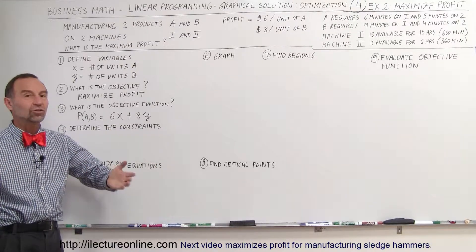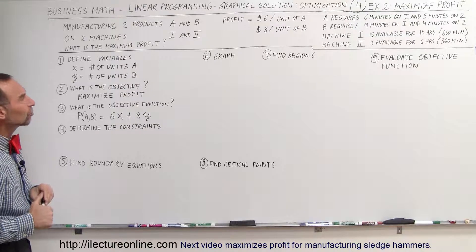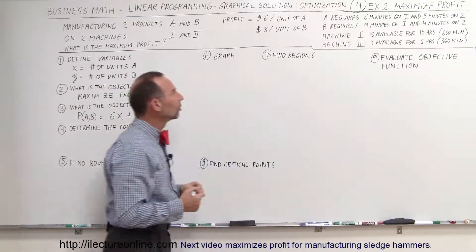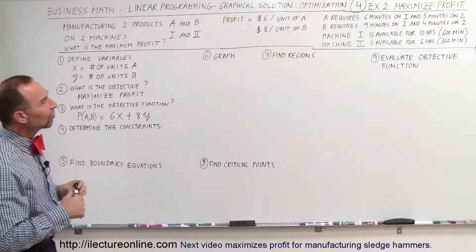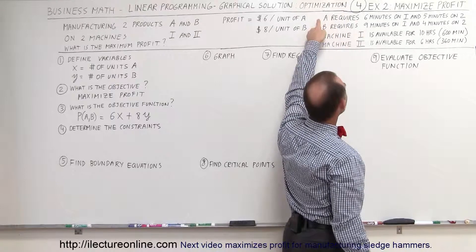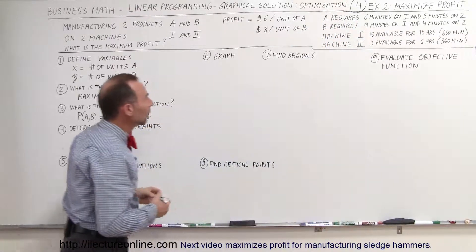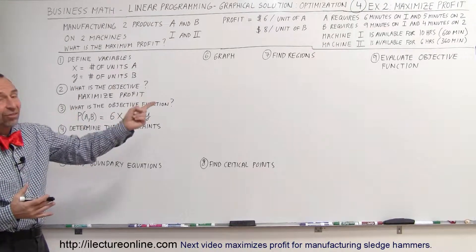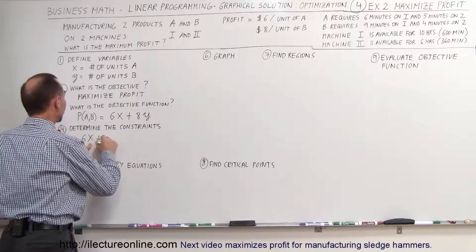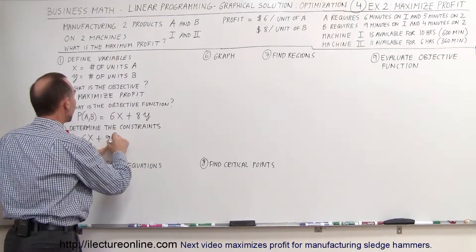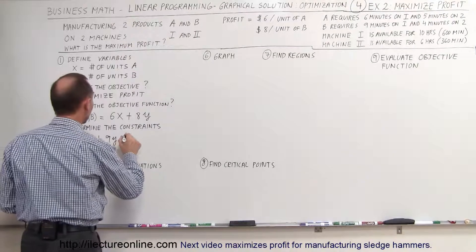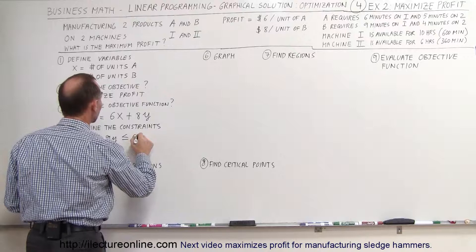Next, step four: figure out the constraints. There's always constraints — you don't have an infinite number of everything. We have a maximum number of hours on each machine. The constraint for machine one is that 6 minutes for A times X units plus 9 minutes for B times Y units cannot exceed 600 minutes. So 6X + 9Y ≤ 600.